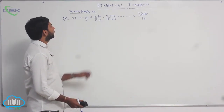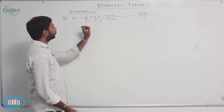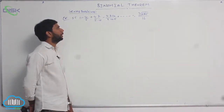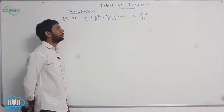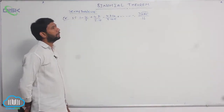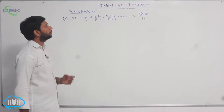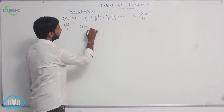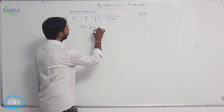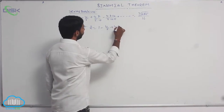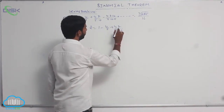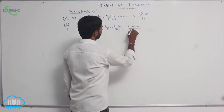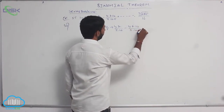In the next example, show that 1 minus 4/5 plus 4·7/5·10 minus 4·7·10/5·10·15 plus and so on is equal to the cube root of 625/16.